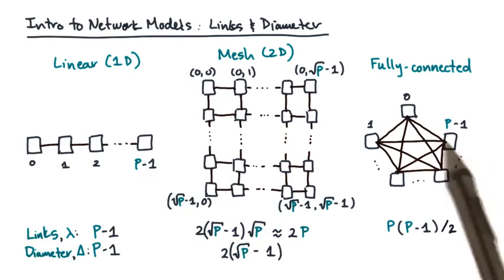The fully connected network has a link between every pair of nodes. So its diameter is just one.